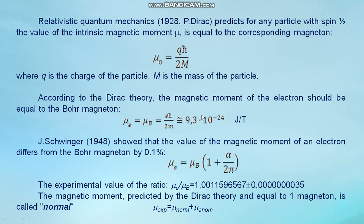According to the Dirac theory, the magnetic moment of the electron should be equal to the Bohr magneton, μ_B equals 9.3×10⁻²⁴ J/T. Schwinger showed that the value of the magnetic moment of an electron differs from the Bohr magneton by 0.1 percent. The experimental value of the ratio is equal to 1.001159567. The magnetic moment predicted by the Dirac theory and equal to one magneton is called normal.